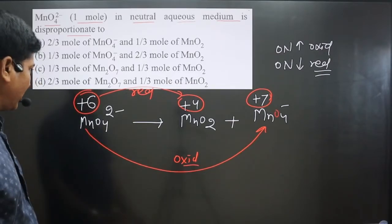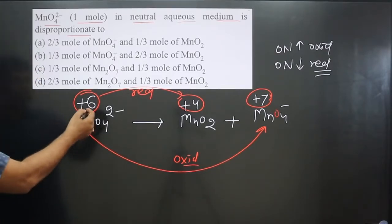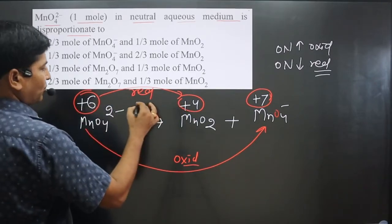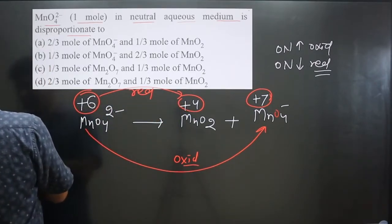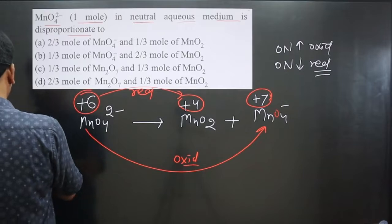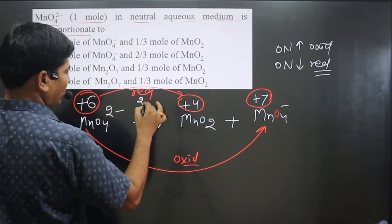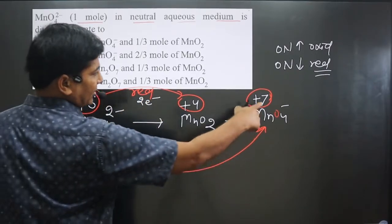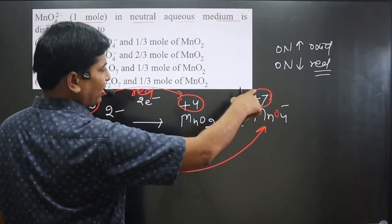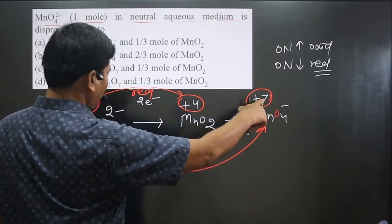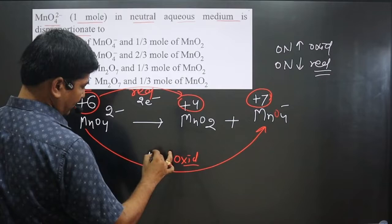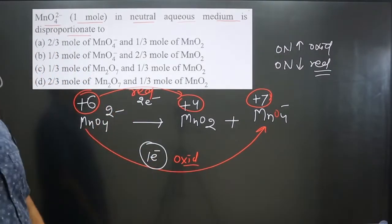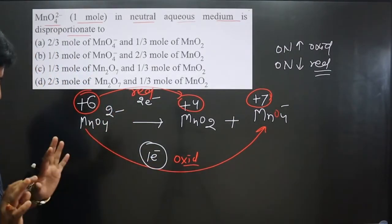Now we balance this equation. Find the difference in oxidation number: six minus four is equal to two electrons gained (reduction). Always subtract the smaller value from the larger value: seven minus six is equal to one electron lost (oxidation). So loss of electron is one and gain of electron is two. Balance the number of electrons.